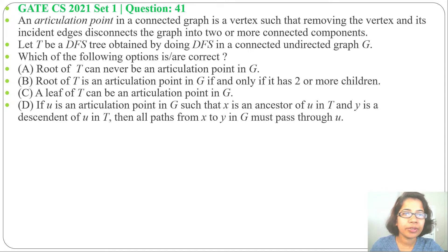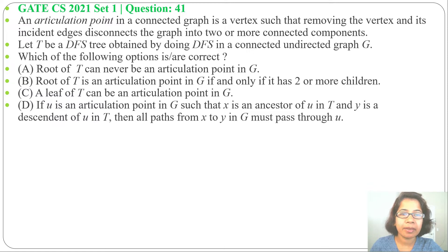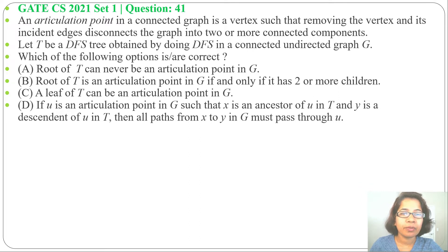Hi, let's solve one previous question of DFS. This question was asked in GATE CH 2021 Set 1, question number 41. An articulation point in a connected graph is a vertex such that removing the vertex and its incident edges disconnects the graph into two or more connected components. Let T be a DFS tree obtained by doing DFS in a connected undirected graph G. Which of the following options is or are correct? Four options are given.